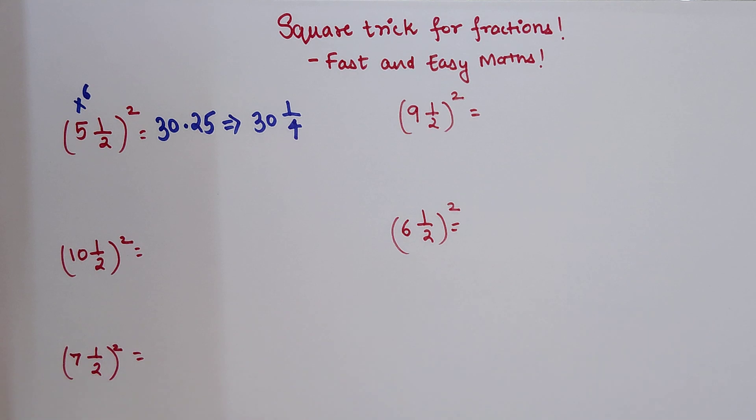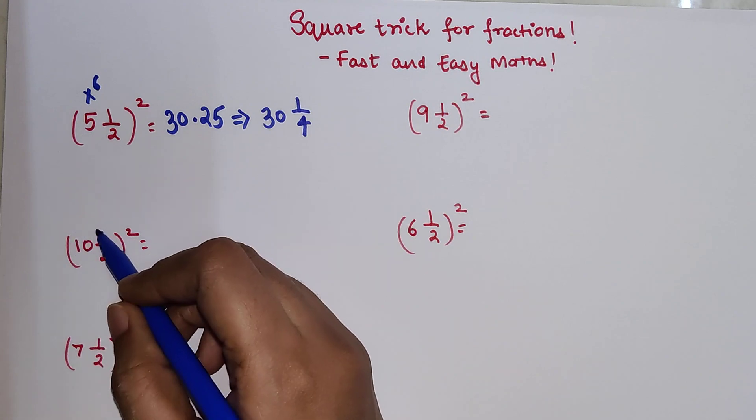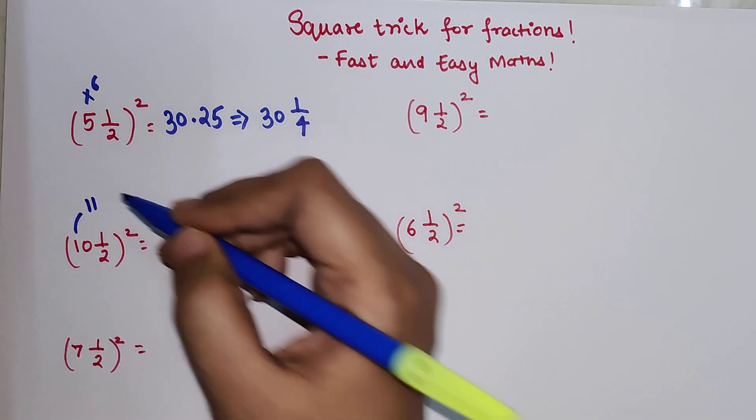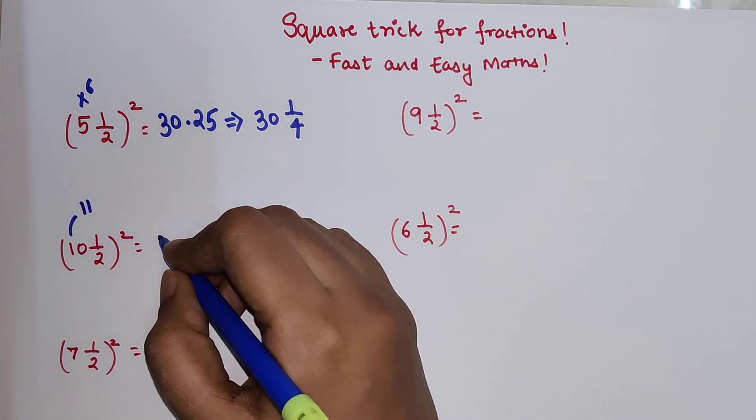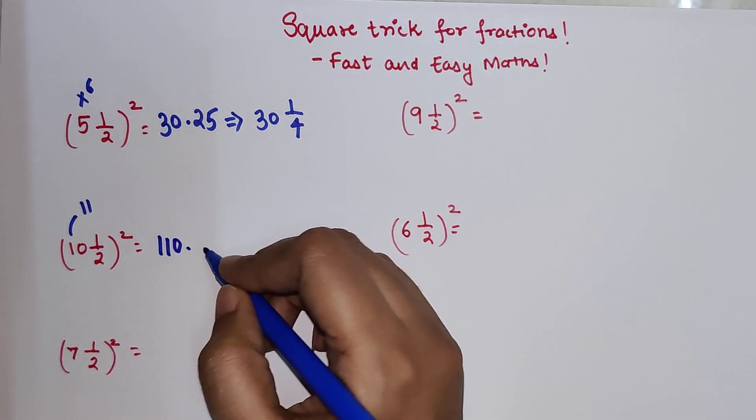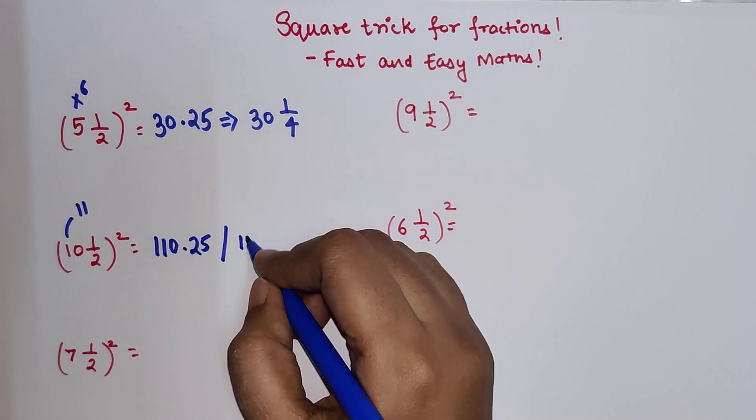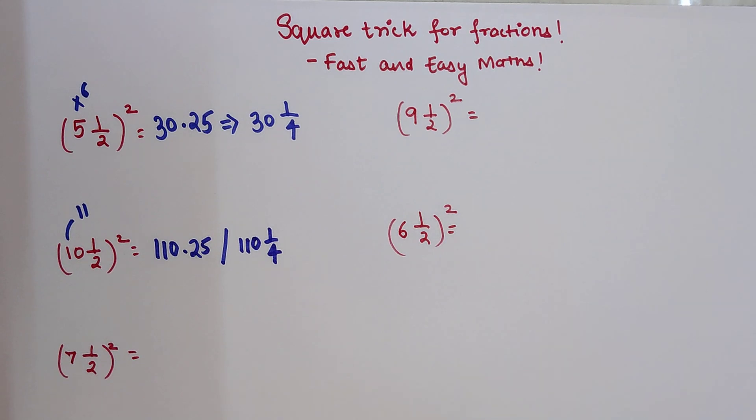All the answers I am going to write down in terms of fractions as well as in terms of decimals. So this one, now what is the number which comes after 10 is 11. So this is very simple, multiplying 11 with 10 you get 110. And if you want it to be written in terms of decimal, it will be 0.25. Or you can also write this as nothing but 110 1 by 4.